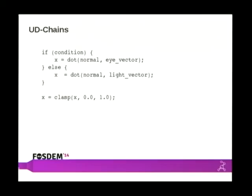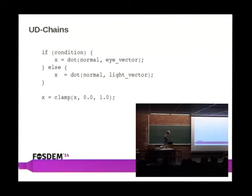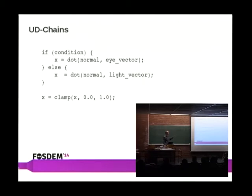One other thing we can't do today — and for which we would need UD chains — is detecting cases where we have two different reaching definitions of X. With SSA, if we pushed a clamp back up into each of those basic blocks, we could generate a DP with saturate on both and cut an instruction out of what we generate today. What we generate today is two dot products and then an extra move with saturate that is essentially useless. We might in the i965 backend actually have a pass that tries to eliminate those moves with saturate, but I don't know if other backends have something similar.